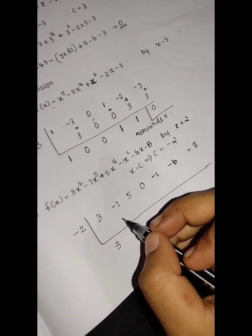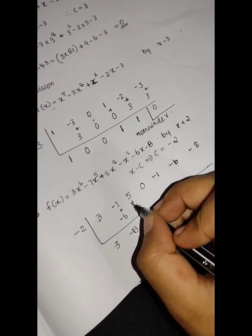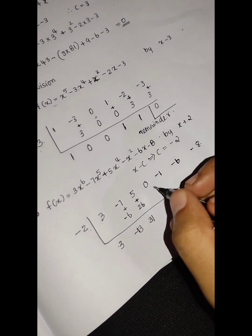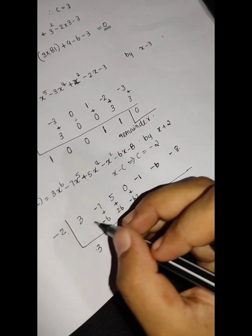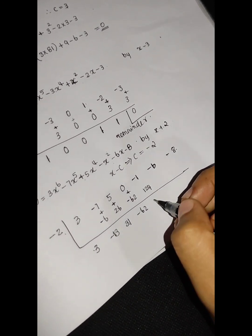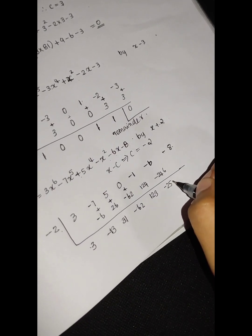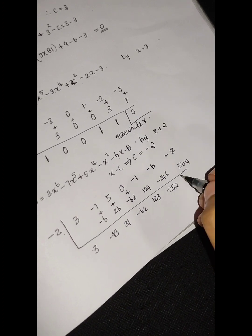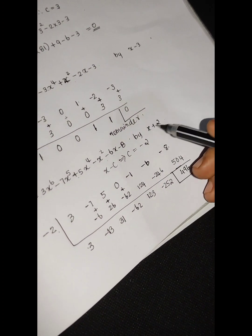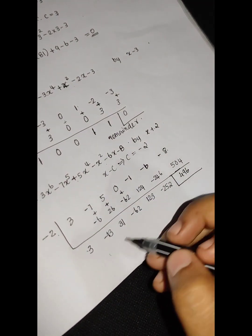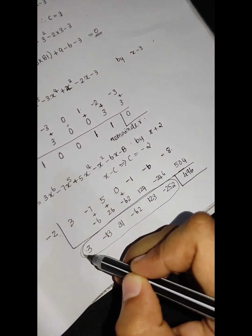Performing synthetic division with minus 2: we get 3, then minus 13, then 31, then minus 62, then 123. Next, minus 62 into minus 2 is 124; 123 into minus 2 gives minus 246; minus 252; and 504. The remainder is 496. Since the remainder is not zero, this polynomial is not divisible by x plus 2.